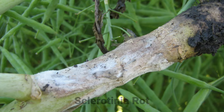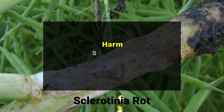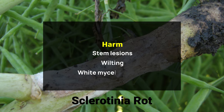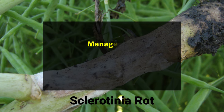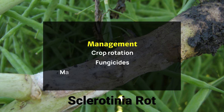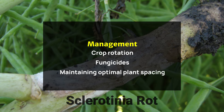Sclerotinia Rot harm: sclerotinia rot can cause stem lesions, wilting, and white mycelial growth on infected tissues. Management: this can be easily managed by practicing crop rotation, using fungicides, and maintaining optimal plant spacing for air circulation.